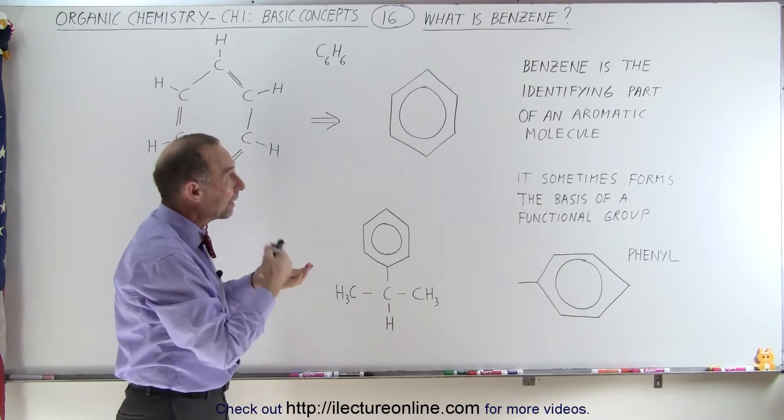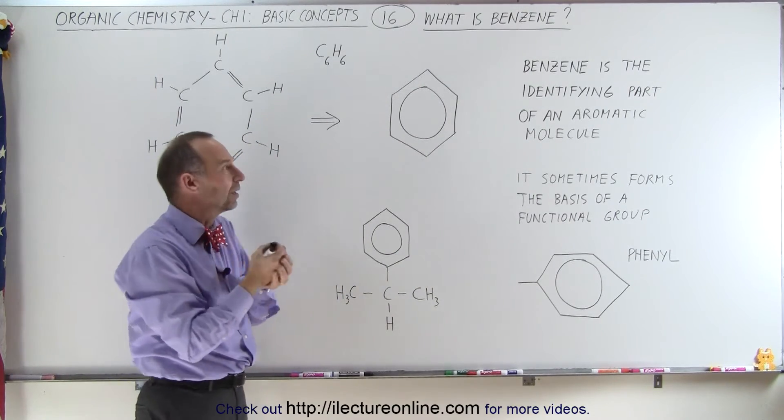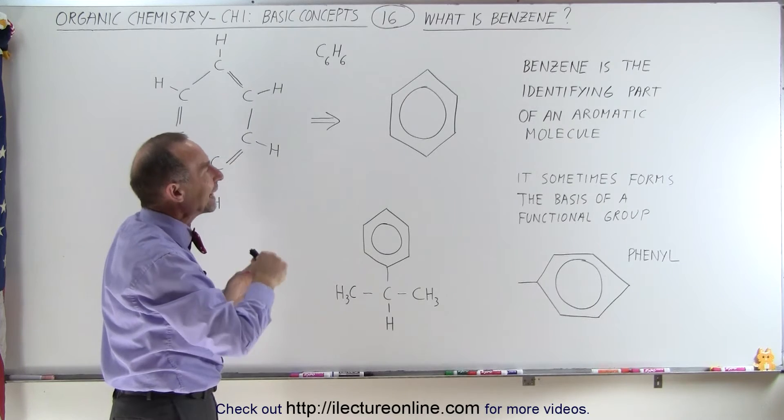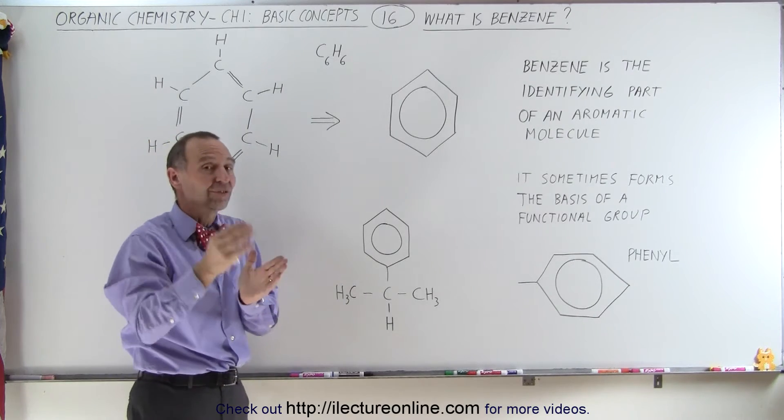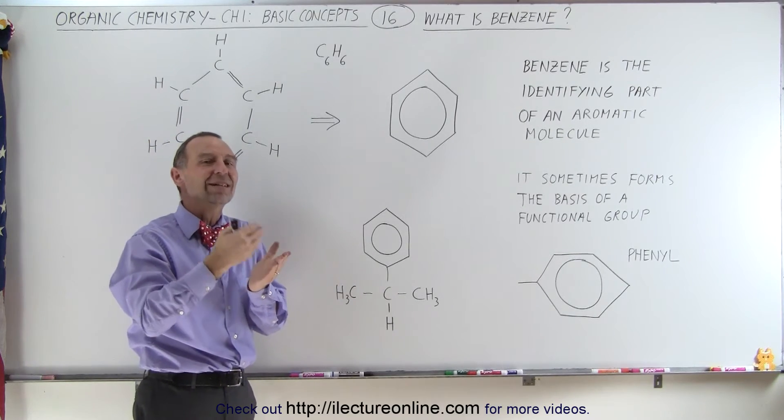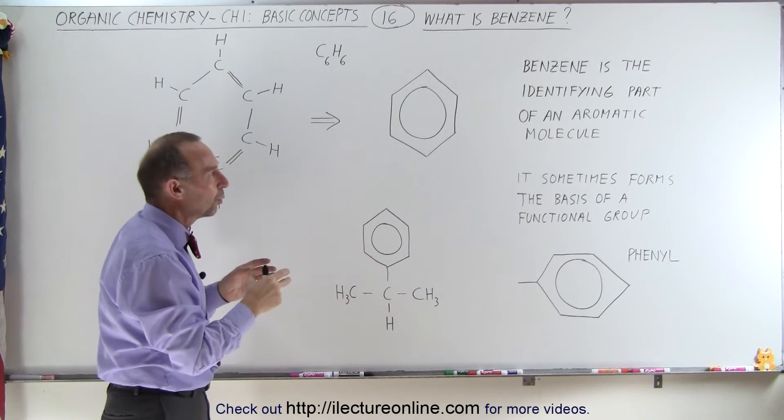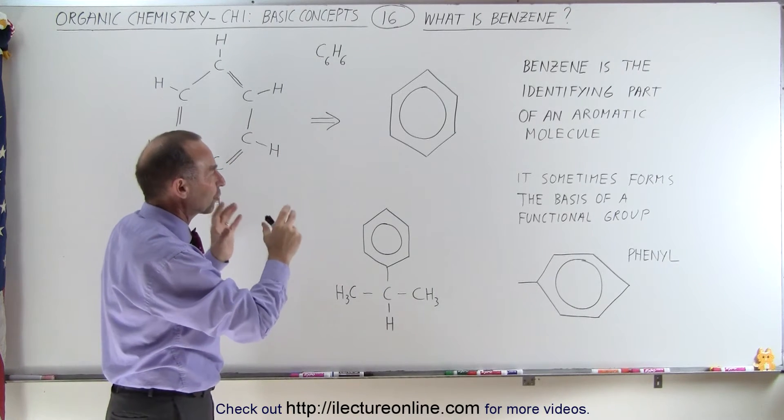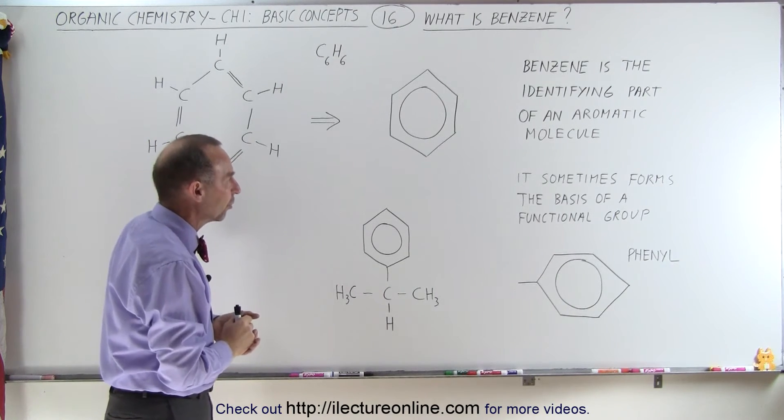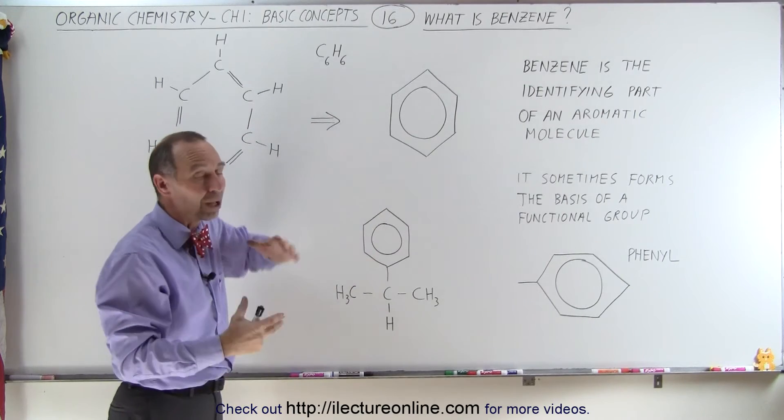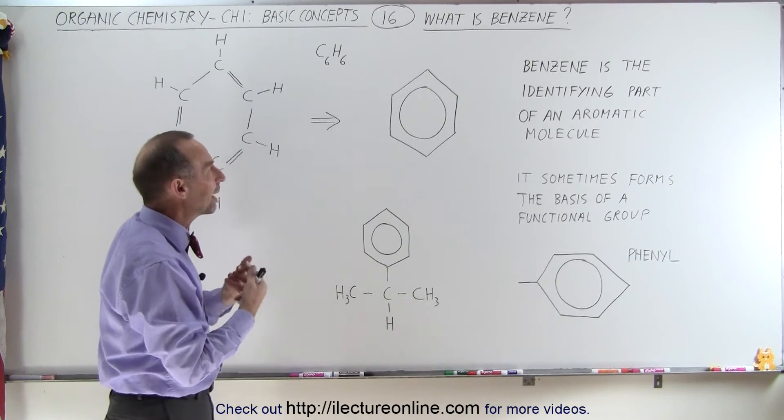Benzene is the identifying part of an aromatic molecule. That was different from the alkanes, the alkenes, and the alkynes, which did not have that as a structure or substructure. So whenever you see something like this in a molecule, you think of it as an aromatic molecule.